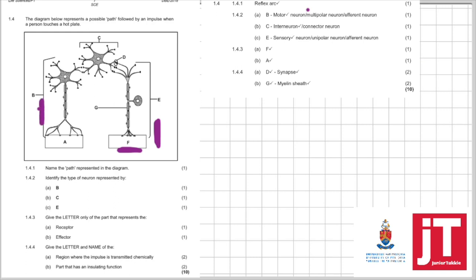Then they ask you the effector. That's easy. Motor neuron always goes to muscles or glands. And so the effector can only be A. Then give the letter and the name of the region where the impulse is transmitted chemically. Chemically, where the impulse is transmitted chemically, that's by a synapse. So they are asking you to look for the synapse. And if you see from my diagram, there is the synapse, a junction between the two neurons. And so it's D and synapse. Then the part that has an insulating function, this question comes out a lot in the exam. We know it's the myelin sheath, but we can see it's only labeled on this neuron. So G myelin sheath. That also wasn't too difficult.